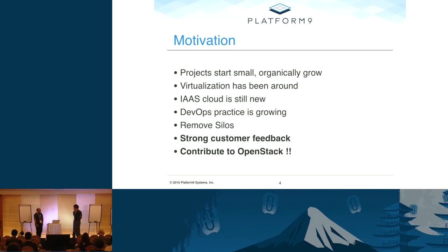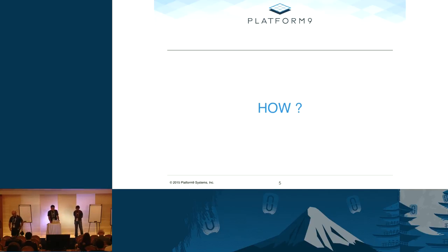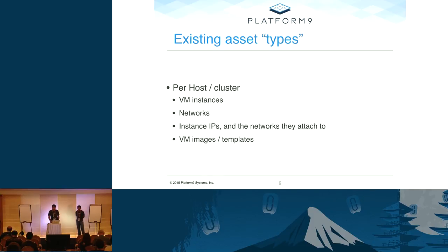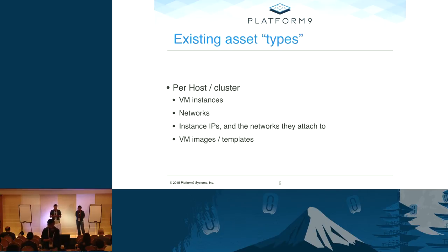Now Amrish will talk about the challenges and the solution. Thanks, Rupak. Now that we've covered the motivation, let's get into the how. The first thing we wanted to do was classify the different asset types that people cared about discovering from their environment. For each host or cluster — which is the currency in the vSphere world — we were interested in discovering not just VM instances, but the networks they connect to, their IP addresses on those networks, as well as any images or templates those instances were spawned from. This applies on KVM just as it does on vSphere.